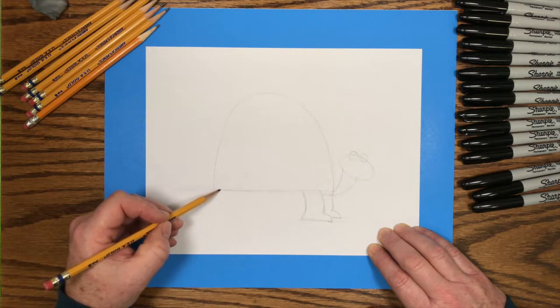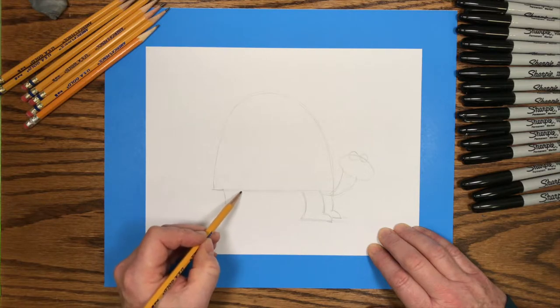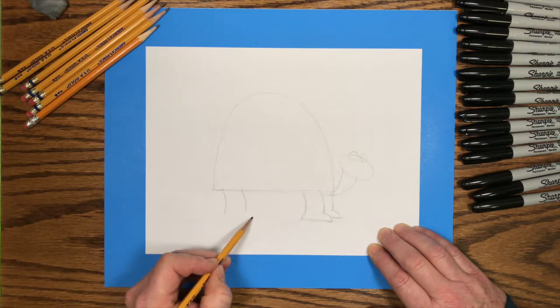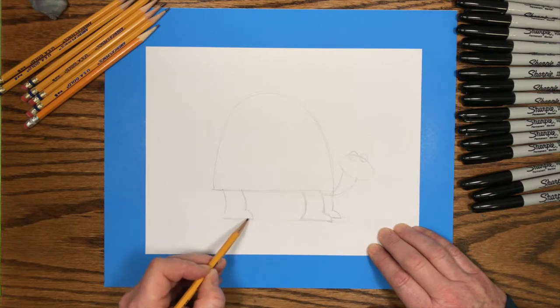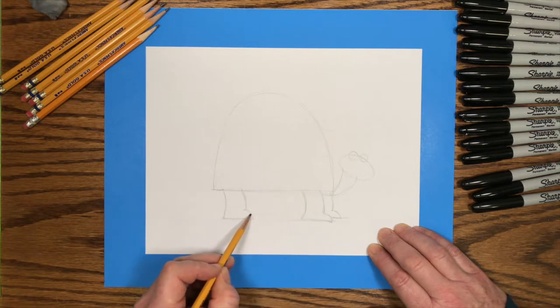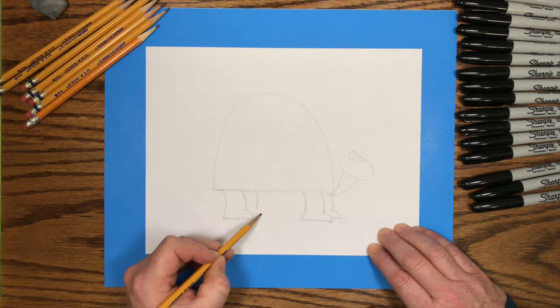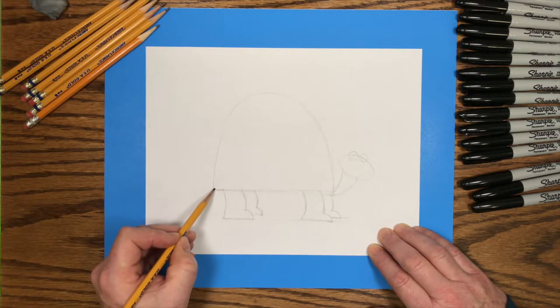And then go to the back of the shell and do the same thing. Draw those two lines coming down with a little foot on the end, straight across from the front feet. And those will be the turtle's back legs. I'll put another one behind the front foot. So now the little turtle has four legs with little feet.